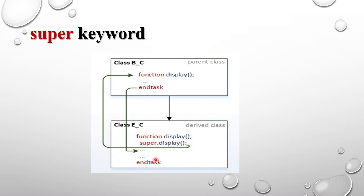So how can I access the parent class method? In the last example, we saw that by declaring a parent class handle and creating its object, we can access the parent method using the parent handle. But if I don't want to create a parent class object or use a parent handle, I can access the parent method using the super keyword.